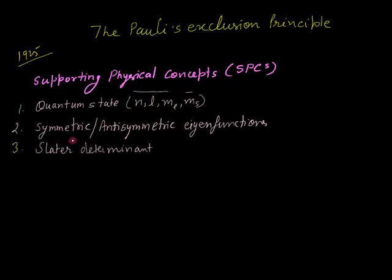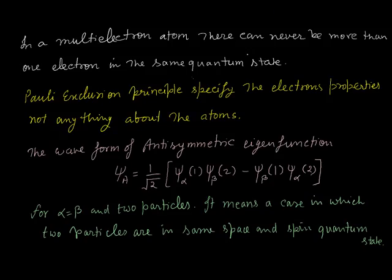There are two types of eigenfunctions: symmetric and anti-symmetric, for identical particles. The Slater determinant is used when one has to write the anti-symmetric or symmetric eigenfunctions for identical particles. This is a supporting physical concept which I will discuss systematically in this video lecture.